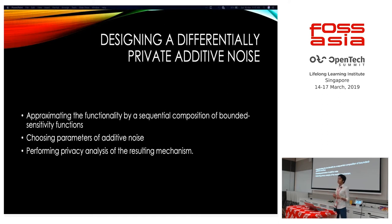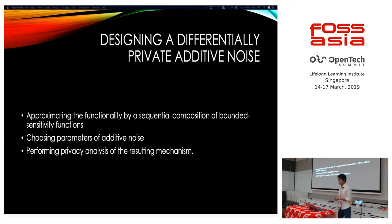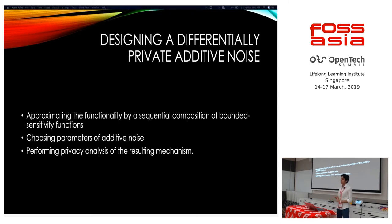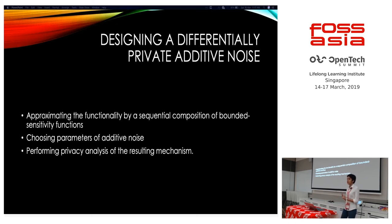When you want to design differentially private additive noise, you need to follow three steps: first, approximate the functionality; then choose the parameters of your additive noise; and then perform privacy analysis. The third step — privacy analysis — is very important.